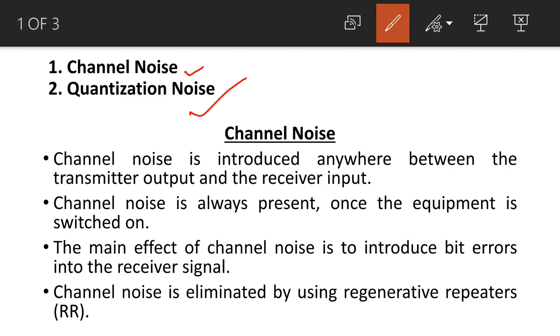Now we take channel noise. This noise gets added in the channel and this may corrupt the signal. Channel noise is introduced by the various disturbances available on the channel. Channel noise is introduced anywhere between the transmitter output and the receiver input.